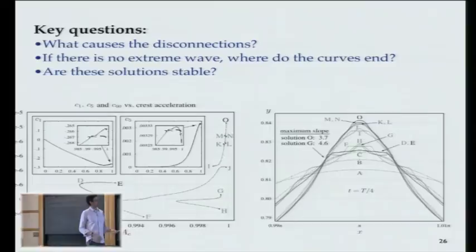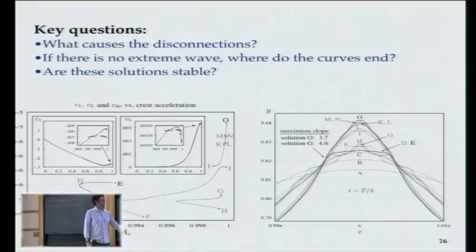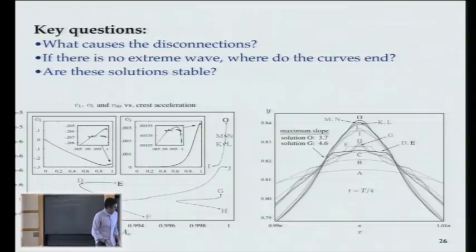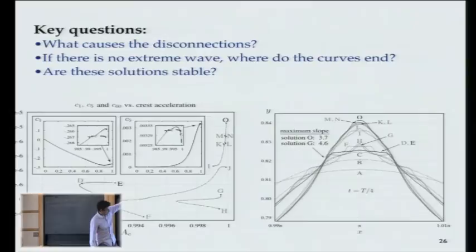So if there's no extreme wave, where do the curves end? It must be something singular. Another question is where do those disconnections come from? A nicer way to see all the different curves is to plot the 60th Fourier mode of the initial condition versus crest acceleration — you really see how they all separate. This is the bifurcation diagram, and corresponding to each end point is one of the solution curves.